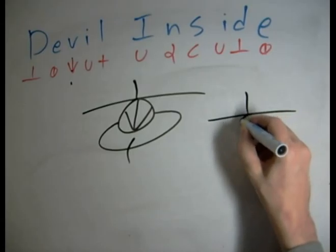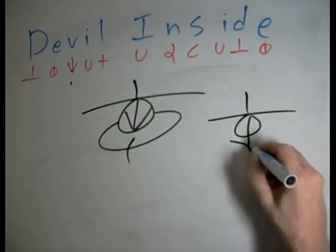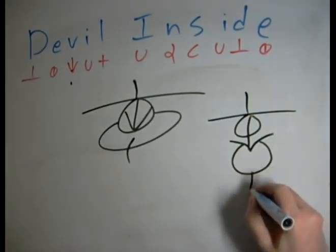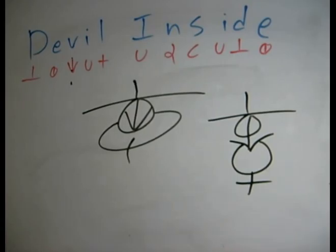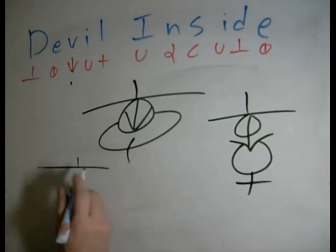We can go D, E, V, I, L. What else can we do? Let's try some more. Let's try maybe making it into a perfect box here. Kind of like a Chinese character.